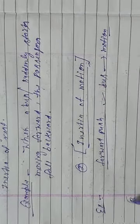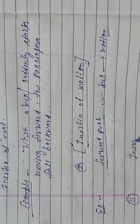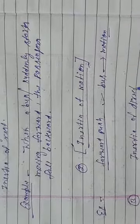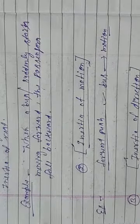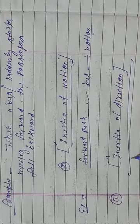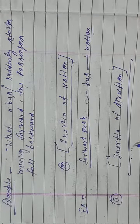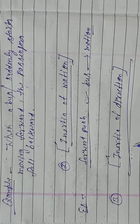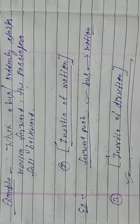Next, our third type is inertia of direction. The tendency of an object to oppose any change in its direction of motion is called the inertia of direction. This is the definition of inertia of direction.